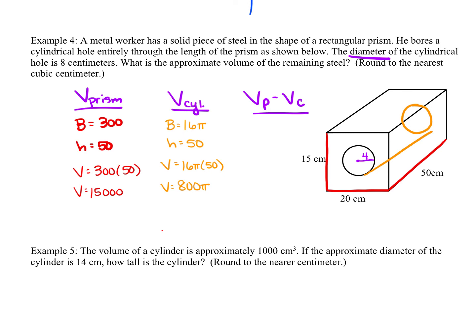Finally, I take the volume of the prism — 15,000 — and subtract the volume of the cylinder — 800π. The directions say to round to the nearest cubic centimeter, so typing 15,000 minus 800π into the calculator gives 12,486.7, so approximately 12,487 centimeters cubed as the final answer.